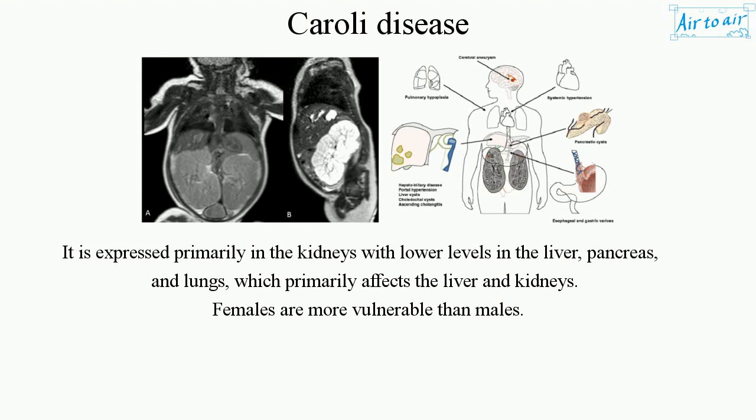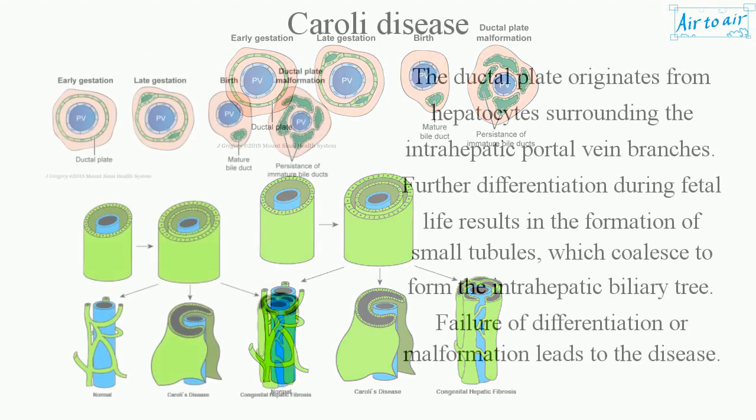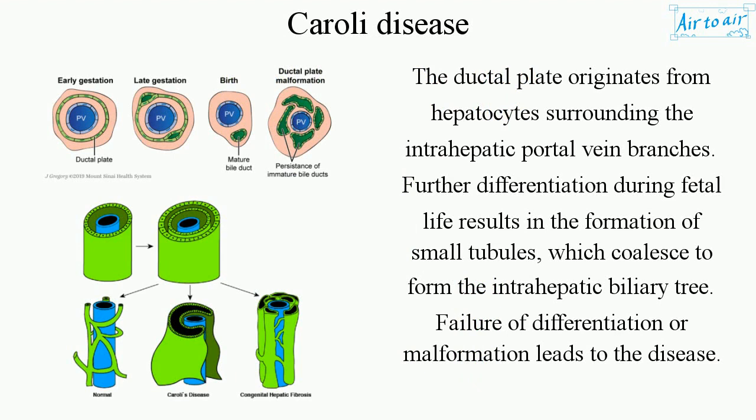Females are more vulnerable than males. The ductal plate originates from hepatocytes surrounding the intrahepatic portal vein branches. Further differentiation during fetal life results in the formation of small tubules, which coalesce to form the intrahepatic biliary tree. Failure of differentiation or malformation leads to the disease.